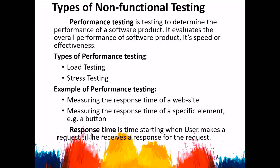Performance testing is testing to determine the performance of a software product. It evaluates the overall performance of a software product — its speed or effectiveness — so we define how fast or how effective it is. Types of performance testing include load testing and stress testing. An example of performance testing is measuring the response time of a website or a specific element, such as a button. Response time is the time starting when the user makes a request until they receive a response.